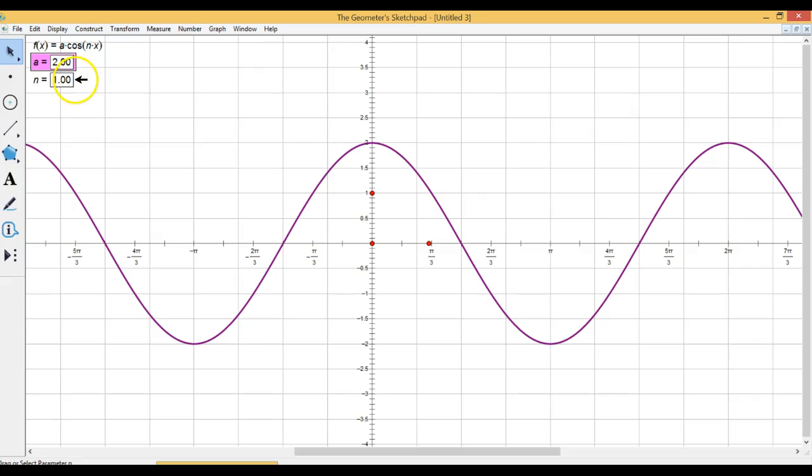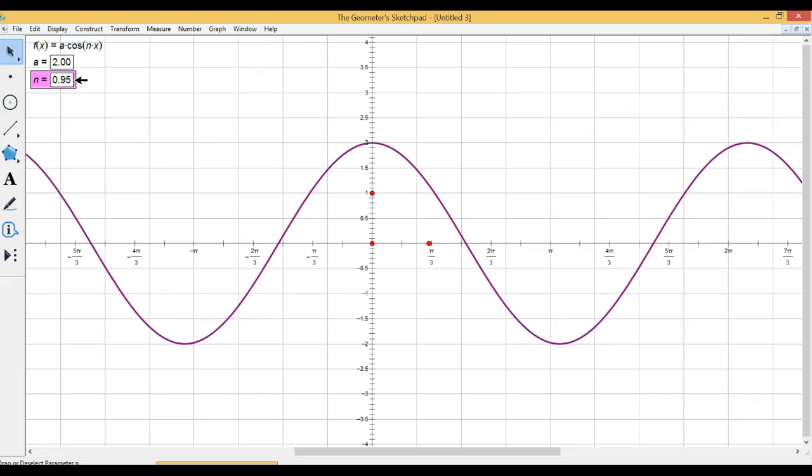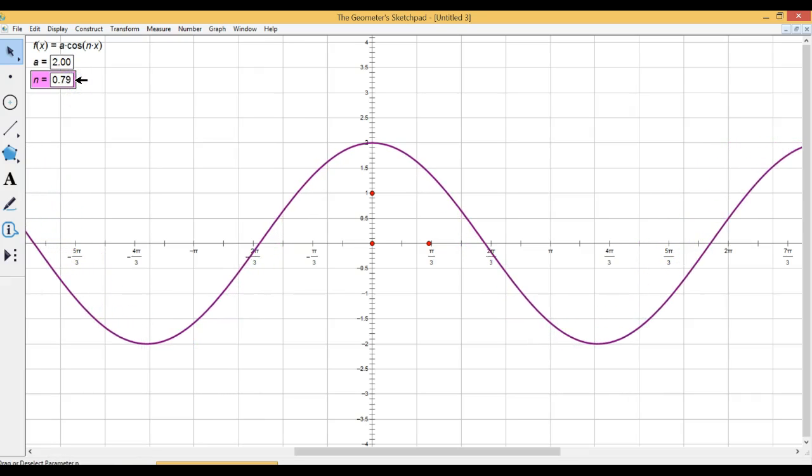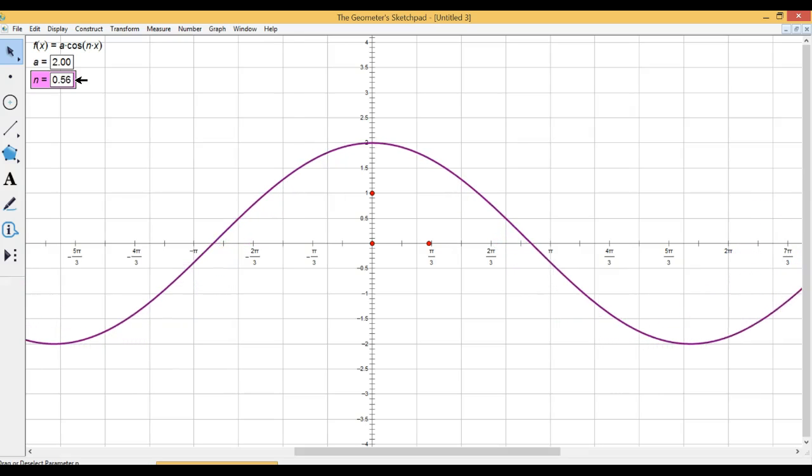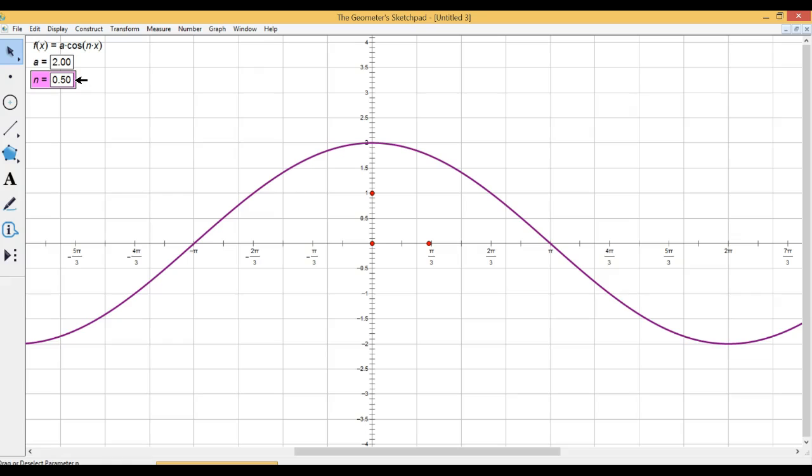And then just a reminder what happens here. Let's go the other way. So let's take n down, and that'll stretch it out. So if you take n to a half, what we end up with is 2 pi, with a period of 2 pi over a half, which is actually 4 pi.